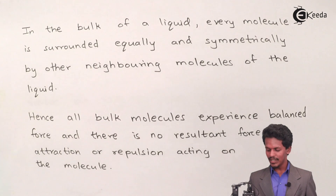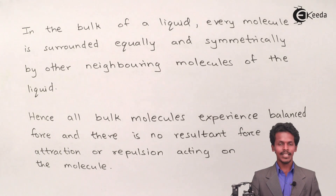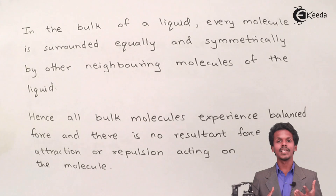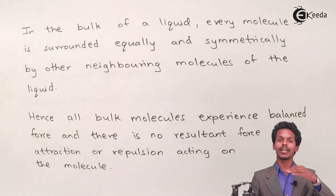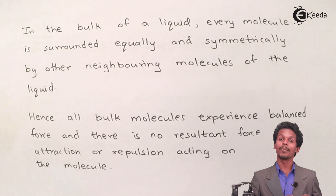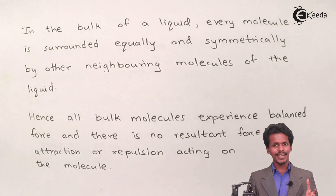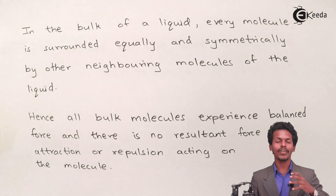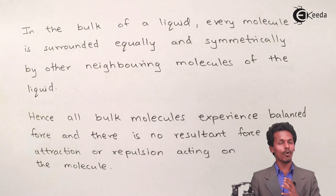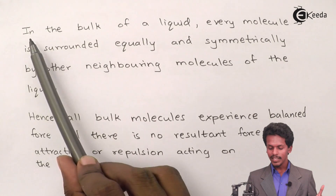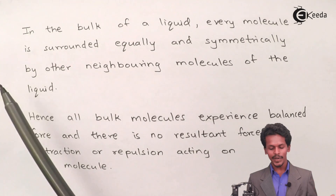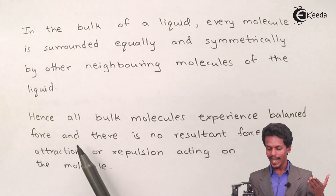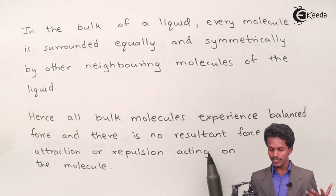Surface tension is a property of a liquid. A liquid has a surface, below which the liquid is present in bulk — where molecules are more numerous compared to the surface, where molecules are fewer. In the bulk, every molecule is surrounded equally and symmetrically by other neighboring molecules. Hence all bulk molecules experience balanced force, and there is no resultant force of attraction or repulsion acting on them.